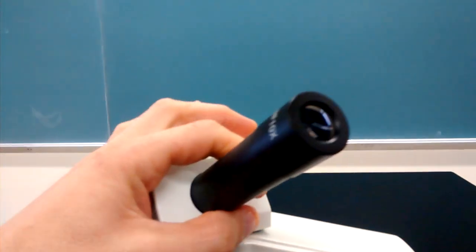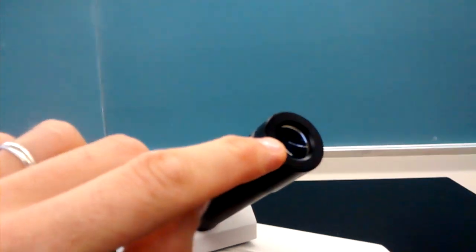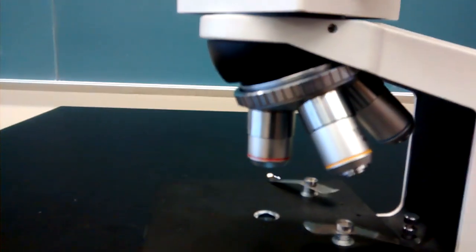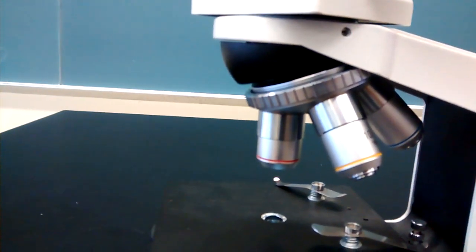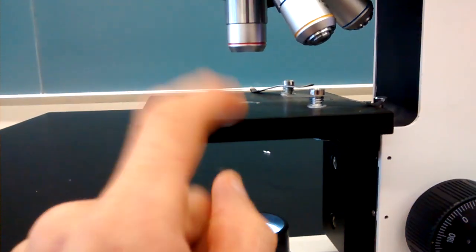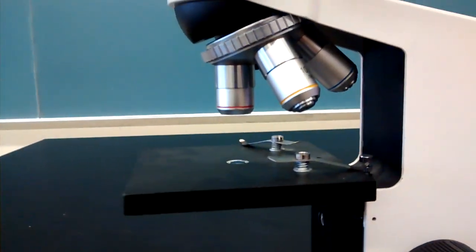You're always going to be looking through this lens called the eyepiece lens or the ocular lens. And you'll always also be using one of these three objective lenses. It's called the light microscope because light is used to shine through the specimen to produce the image.